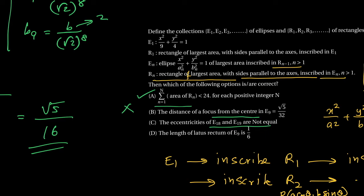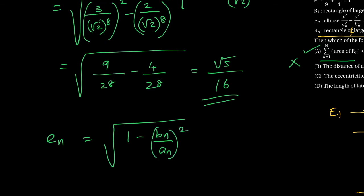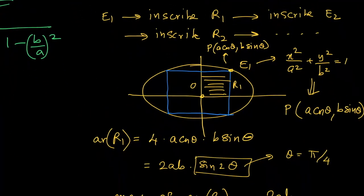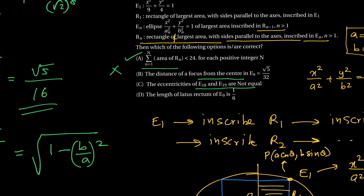For eccentricity of the nth ellipse: en = √(1 − (bn/an)²) = √(1 − (b/a)²), which is independent of n. So all ellipses in the collection are similar and have the same eccentricity. The option stating that eccentricities of E18 and E19 are not equal is a wrong statement — they are in fact equal.